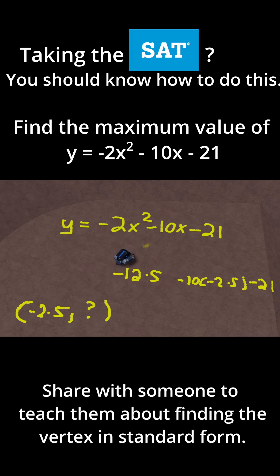And then -10 times -2.5, that becomes positive 25. And we still have a -21. If you evaluate all of this, you'll find that this equals -8.5. So that is the y value of our vertex. Our vertex is -2.5, -8.5.